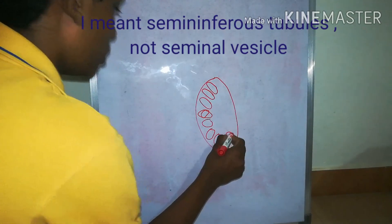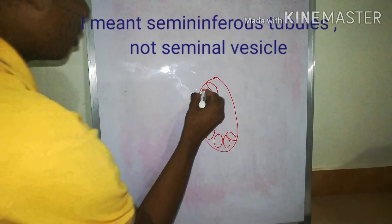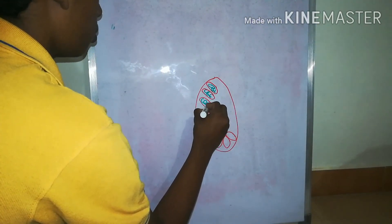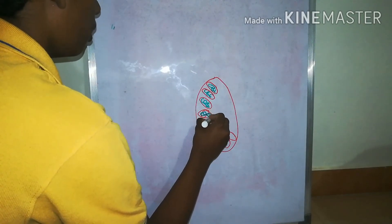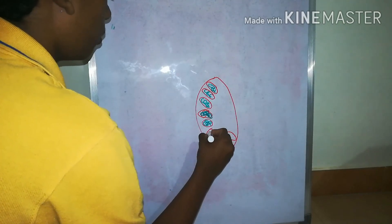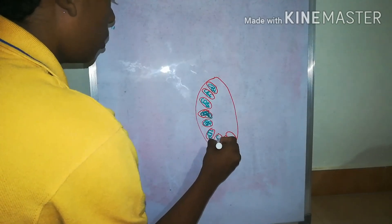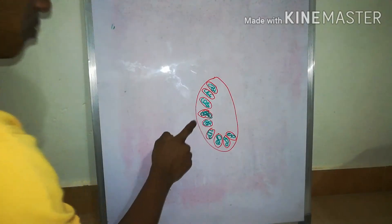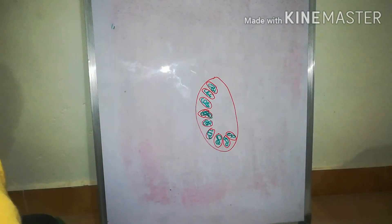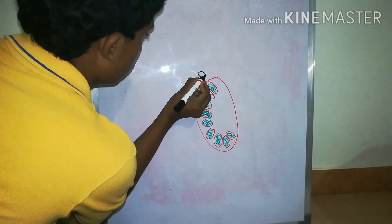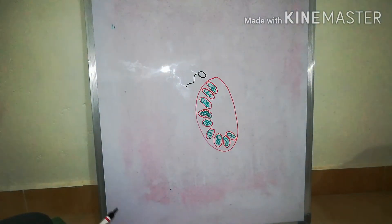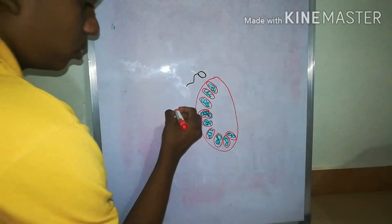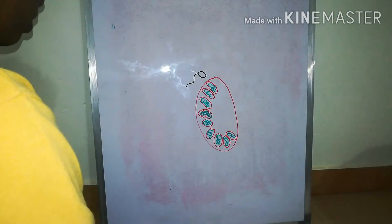The seminiferous tubules are highly coiled structures that produce sperms. These sperms, after they get mature, travel from the seminiferous tubules into the efferent ducts. Let me draw a small sperm and then the efferent ducts.